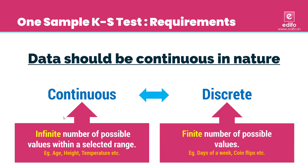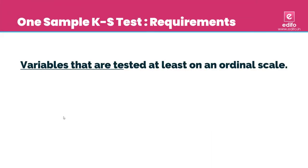In the case of a discrete variable, there are a finite number of possible values. For example, if we flip a coin and count the number of heads, the count could be any integer from 0 to infinity — we can't have 2.5 heads. That's why discrete variables have finite possible values, such as days of the week or coin flips. For KS test, the data should be continuous.